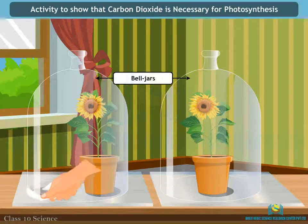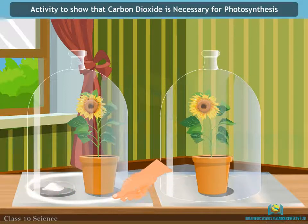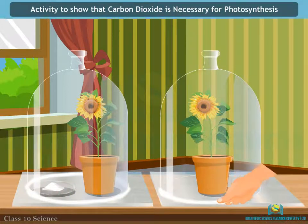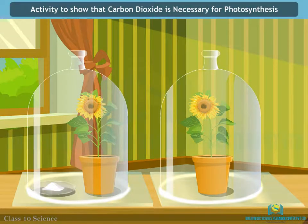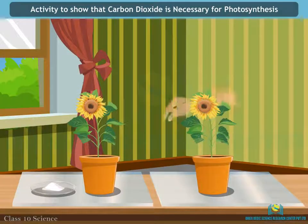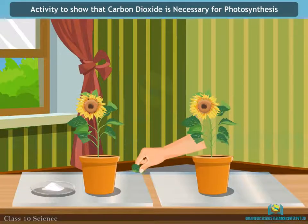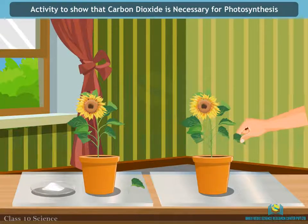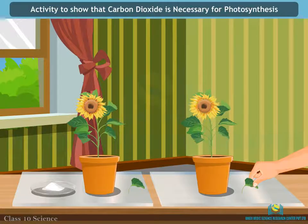Use Vaseline to seal the bottom of the jars to the glass plates so that the setup is airtight. Keep the plants in the sunlight for about two hours. Pluck a leaf from each plant and check for the presence of starch as in the above activity.